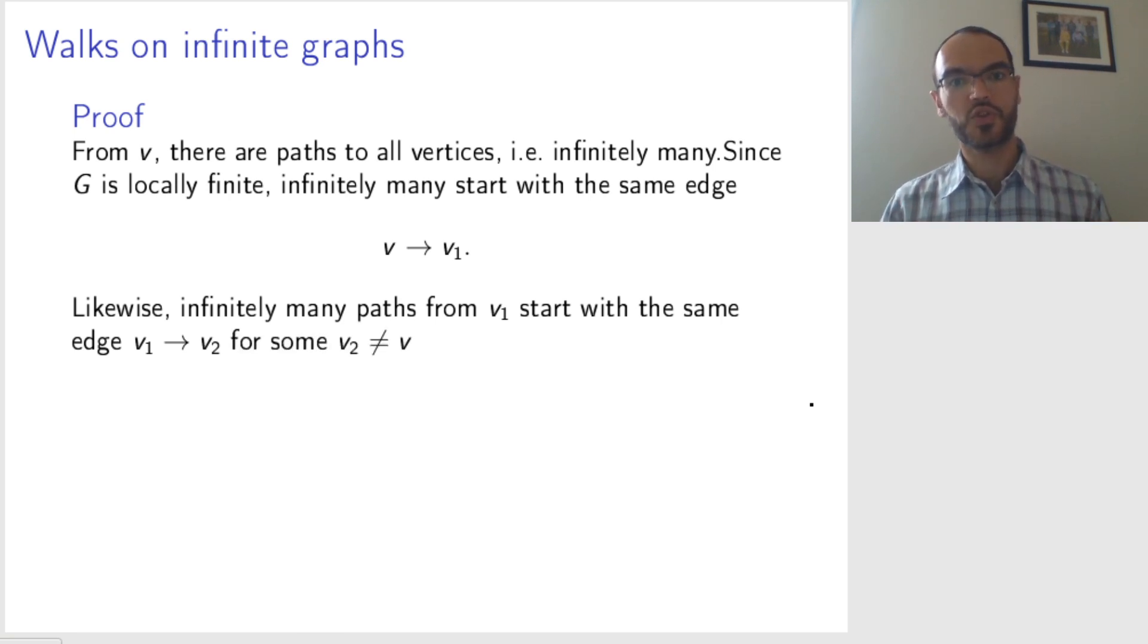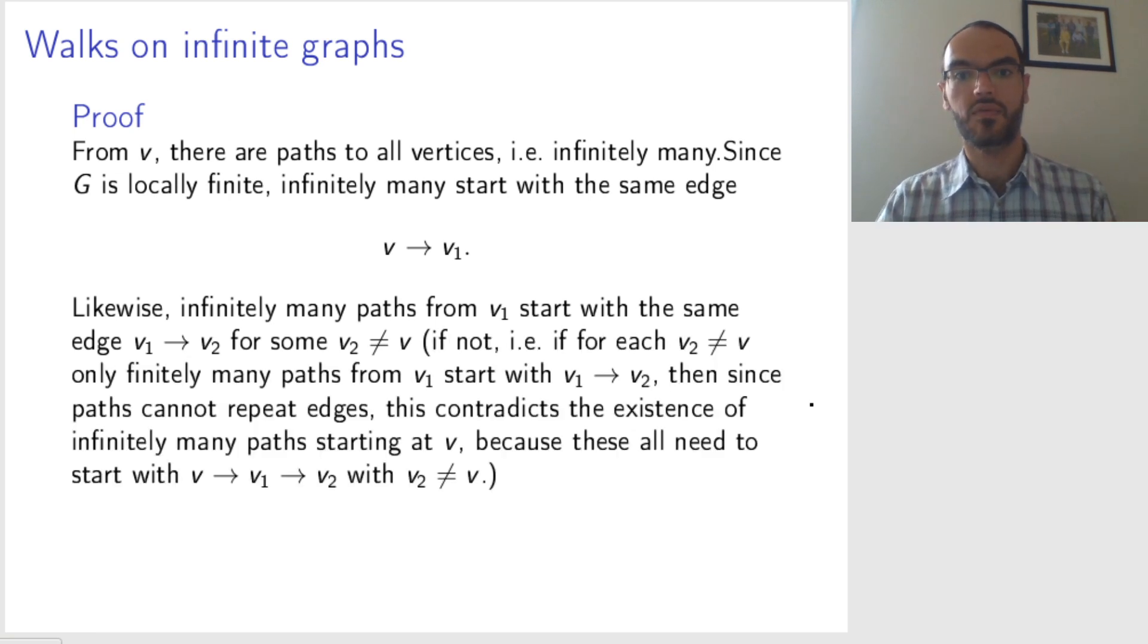And we can choose this edge to be different from the edge going back, or rather, we can choose the second vertex v2 to be different from our starting vertex v. Why is that?